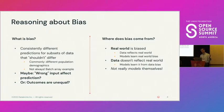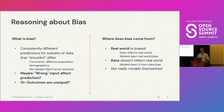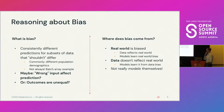Intuitively, bias is somehow when the wrong inputs or facts affect the prediction — maybe your demographic information. Or maybe more broadly, it's when outcomes are unequal: when the model is doing something demonstrably different for different subsets of people. These are loose, intuitive ideas, and I think they're all directionally right. But they're different ideas and they don't necessarily lead to the same conclusions. Where does bias come from? Obviously, the real world. The real world is not fair, and the data we collect about the real world can reflect that real-world unfairness.